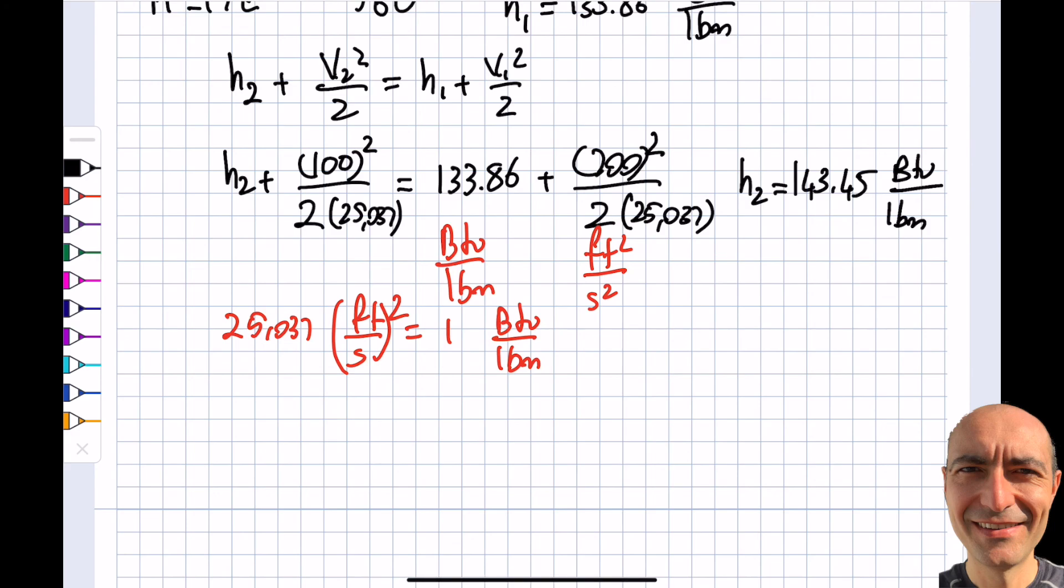Okay, so now I know my H2. So then I go to A17E and I look at which particular temperature corresponds to 143.45 and it's right around 600 Rankine. So that will be the answer to this question. Thank you for watching this segment. Have a good day.